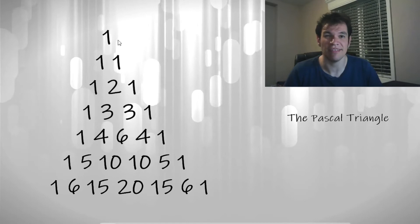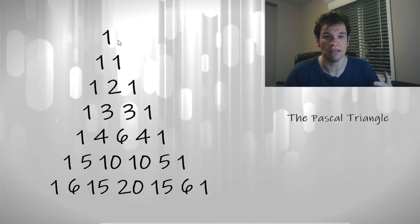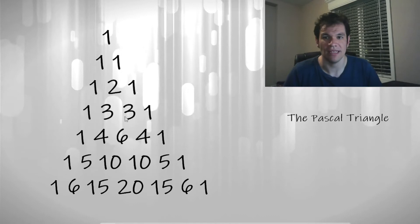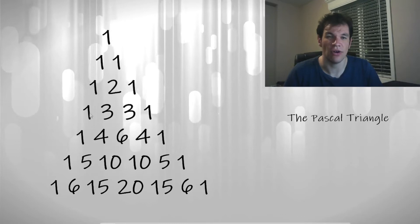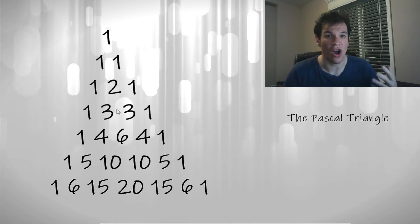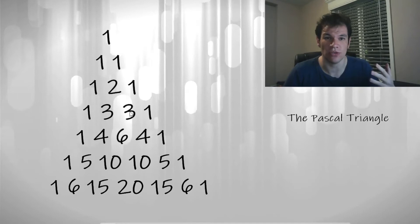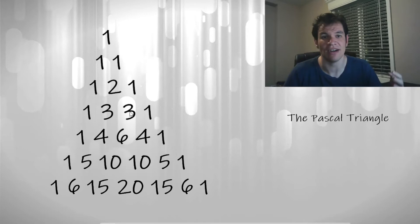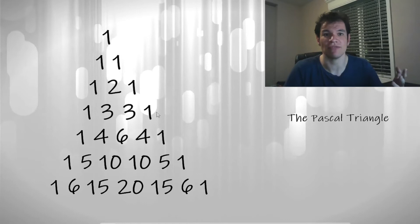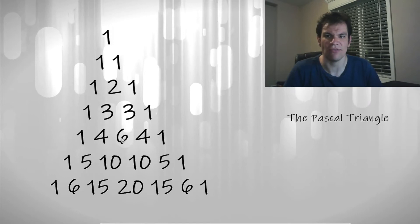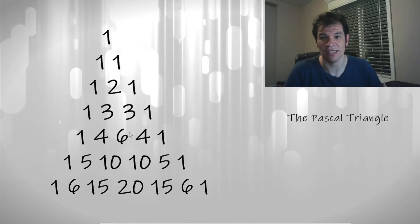It counts the number of ways of taking k objects from a total of n objects. For example, this row is the number of ways to take 0 objects from a total of 3. One object from a total of 3, just choose which one to leave out of the set and then there are 3 possibilities. And choosing 3 objects from a total of 3. Or here for example, there are 6 possible ways of taking 2 objects from a total of 4. There is 4 times 3 divided by 2.